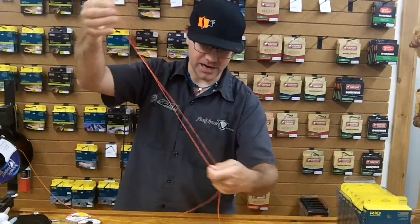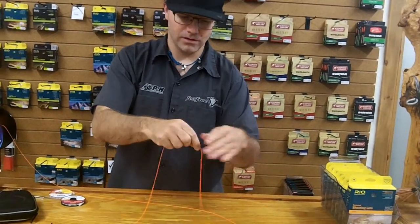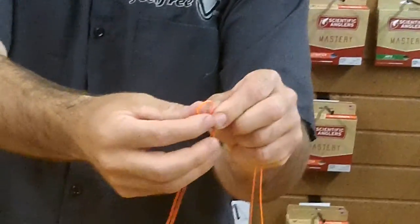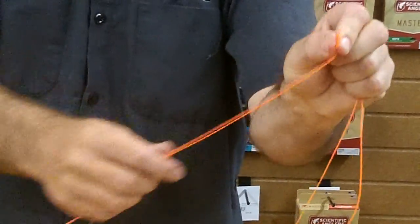You're going to bring this tag end back and make a nice long loop. You're going to fold that loop right here in your fingers like so, making a smaller loop.